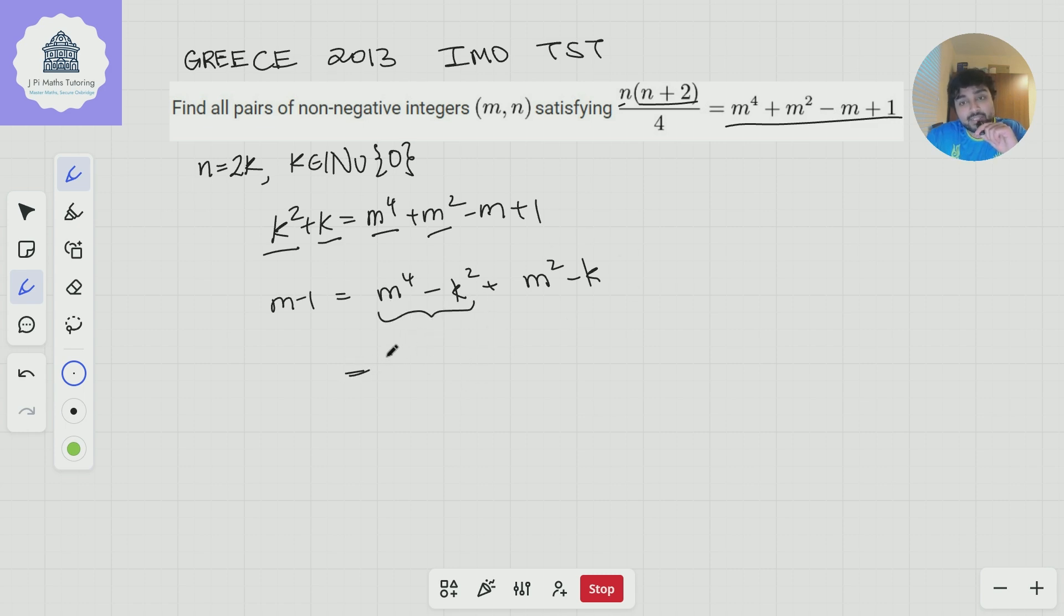So if I look at this thing, that's just the difference of two squares. It's (m^2 + k)(m^2 - k). Now I've got another m^2 - k here. And so if I put all of that together, I get (m^2 + k + 1)(m^2 - k). And all of this equals m - 1. Now, here's the thing. If m is bigger than 1, well, this thing here is bigger than 0. Nothing remarkable there.